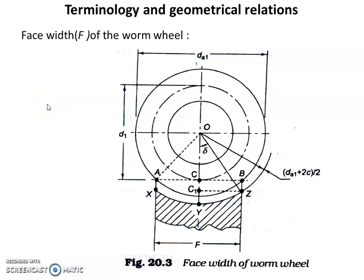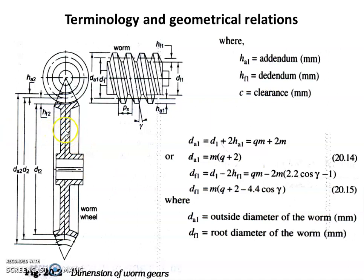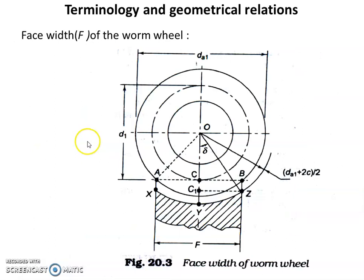Two more geometrical relationships remain: face width and the angle delta. The face width F is the width of the Worm wheel shown in the diagram. In the figure, the circles represent the addendum diameter DA1, pitch circle diameter D1, and dedendum diameter DF1 of the Worm, with center O.